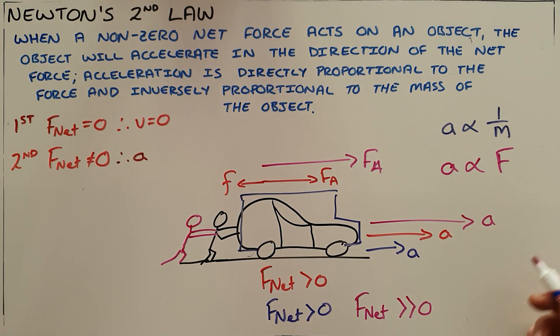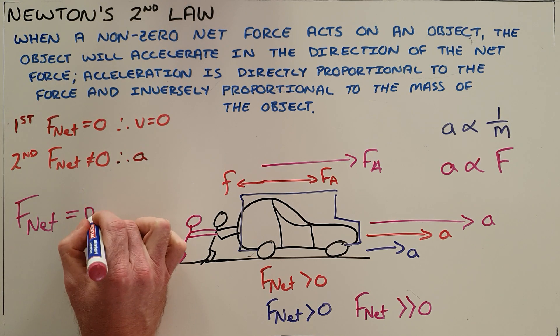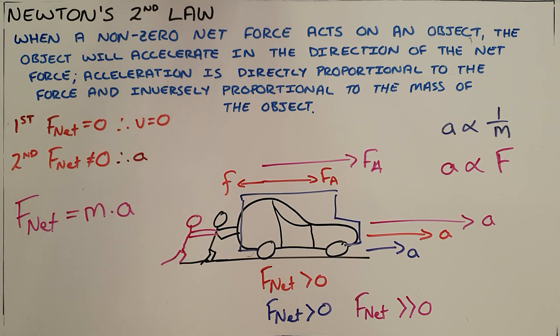This can all be summarized into Newton's second law equation, which tells us the net force acting on an object is equal to the mass of that object multiplied by the acceleration of that object: F_net = m × a.